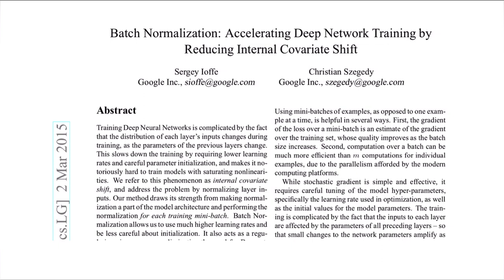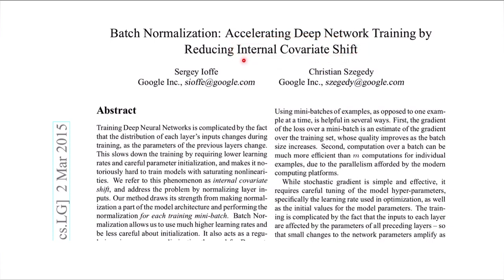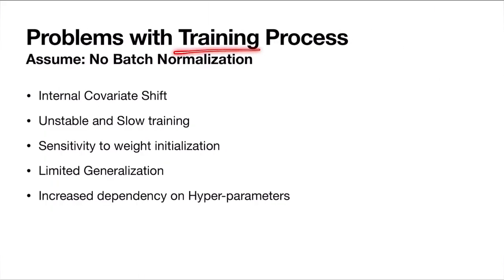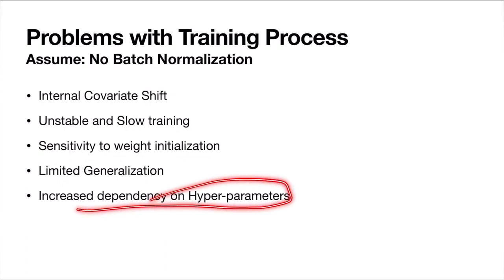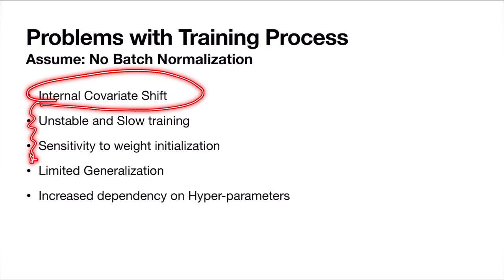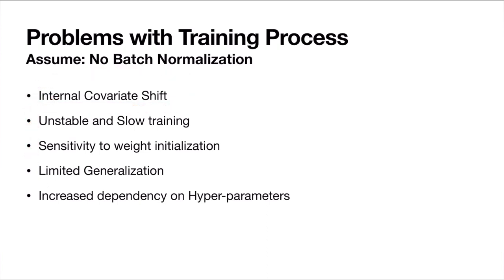The paper title tells us they accelerated training by reducing internal covariate shift, meaning internal covariate shift is some kind of problem. By solving or mitigating it, we are able to accelerate training. The problems with training before batch normalization include: internal covariate shift, unstable and slow training, sensitivity to weight initialization, limited generalization, and more dependence on hyperparameters. Internal covariate shift is the main issue, which also causes the other problems.